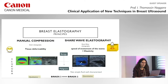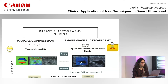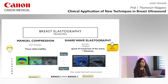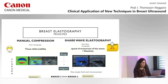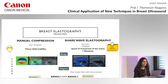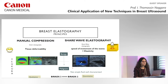Very quickly, because I think most of you know the principle of elastography — there are two types. Strain elastography consists of manual compression and evaluation of tissue deformability. The other type is shear wave elastography, which evaluates the speed of movement of the waves.